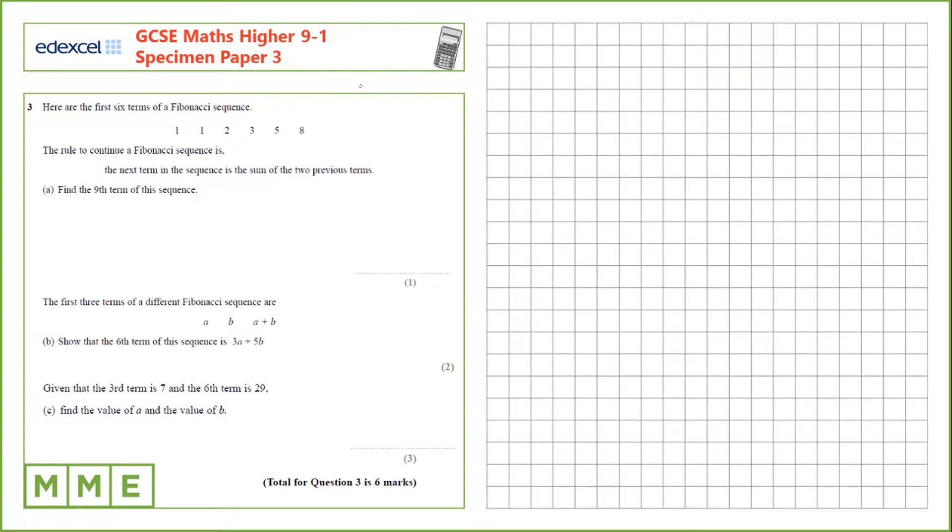Question 3. Here are the first six terms of a Fibonacci sequence. The rule to continue with a Fibonacci sequence is that the next term in the sequence is the sum of the two previous terms. We need to find the ninth term of this sequence, so let's continue it.